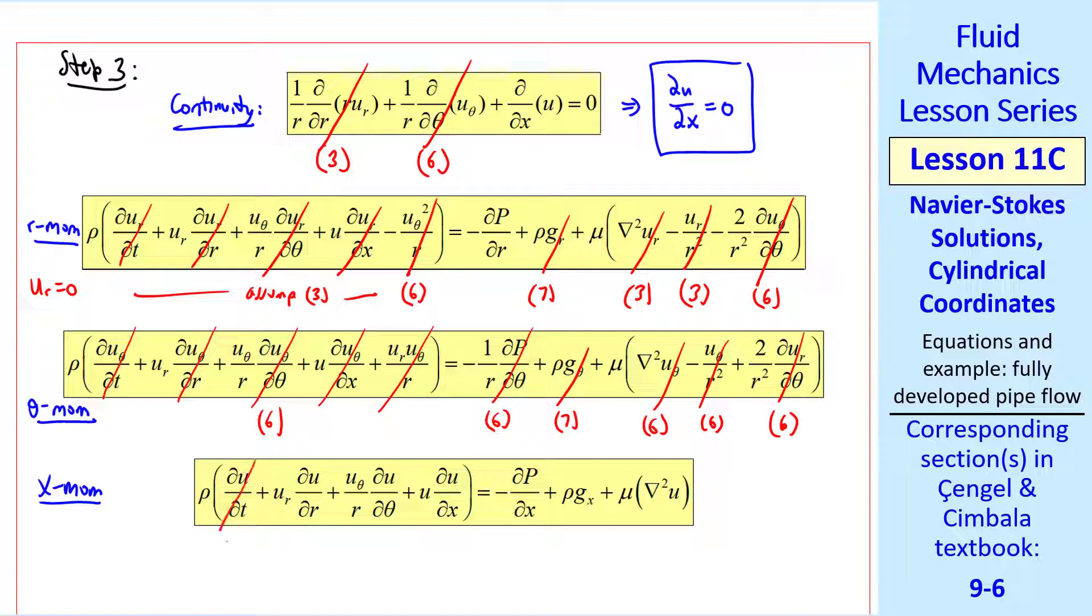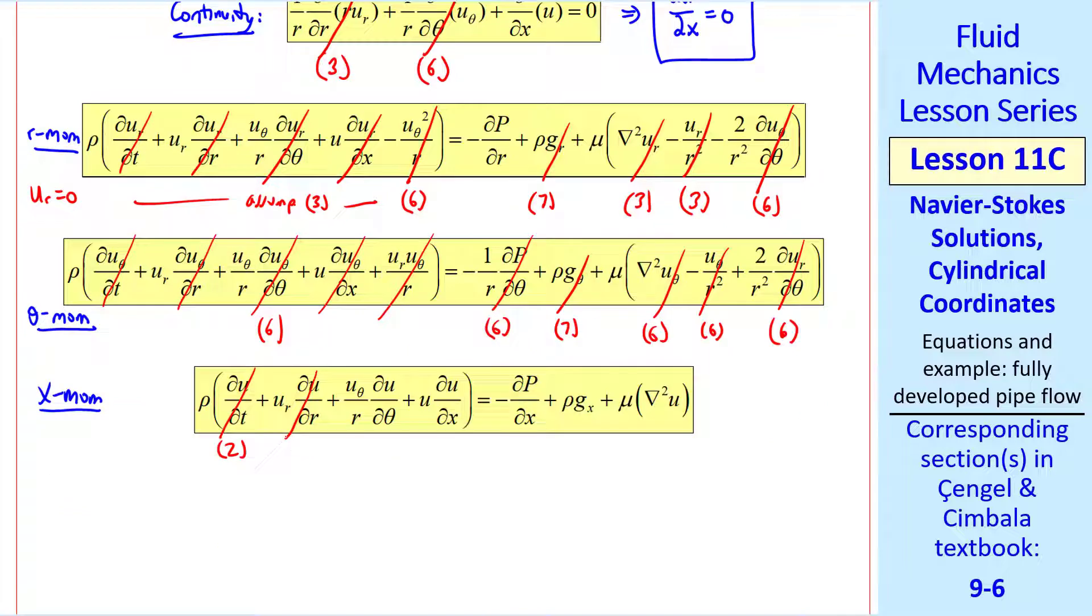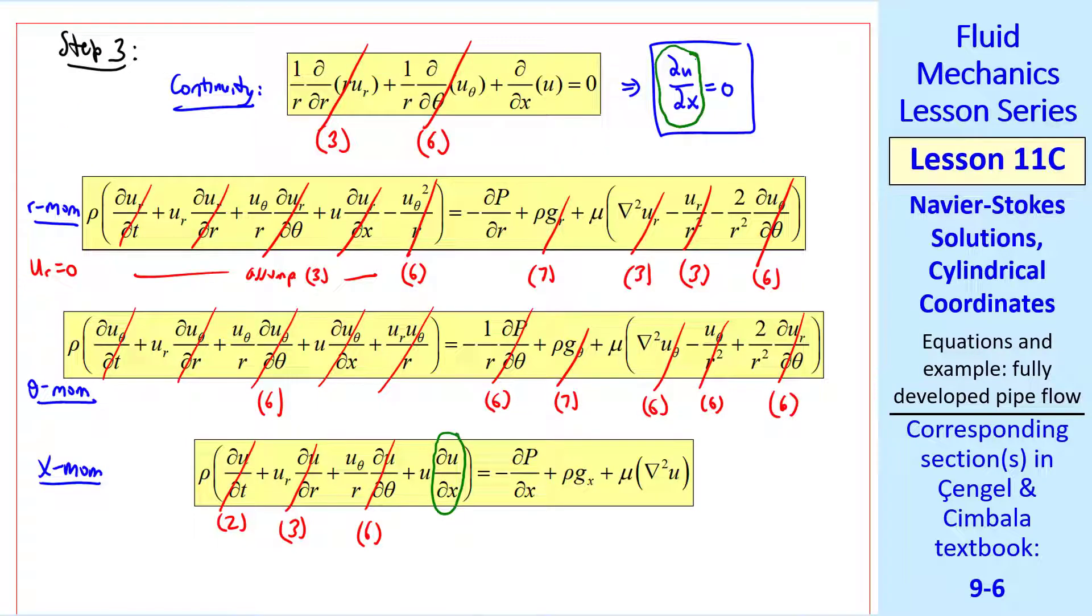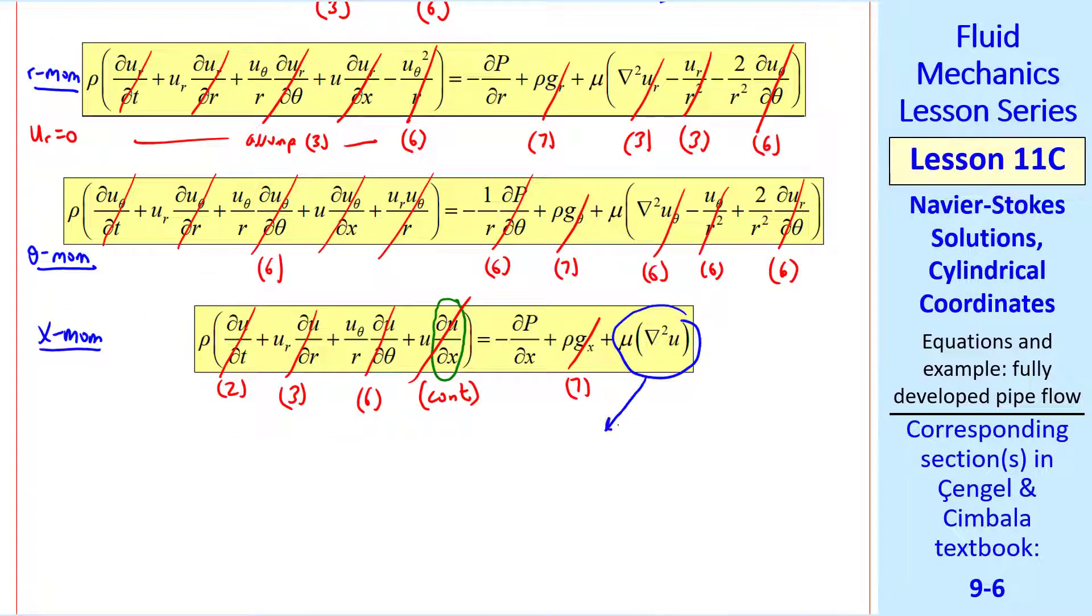Now consider the x momentum equation in the direction of the flow down the pipe. This flow is steady. Assumption two. ur is zero by assumption three. uθ is zero. This term is not zero in general. But notice, from continuity, the ∂u/∂x is zero. So that term goes away because of continuity. We have to keep the pressure term in. But there's no gravity. And I'll expand this term.